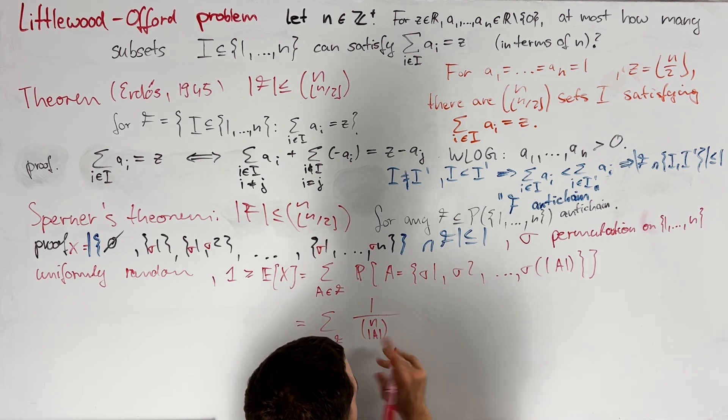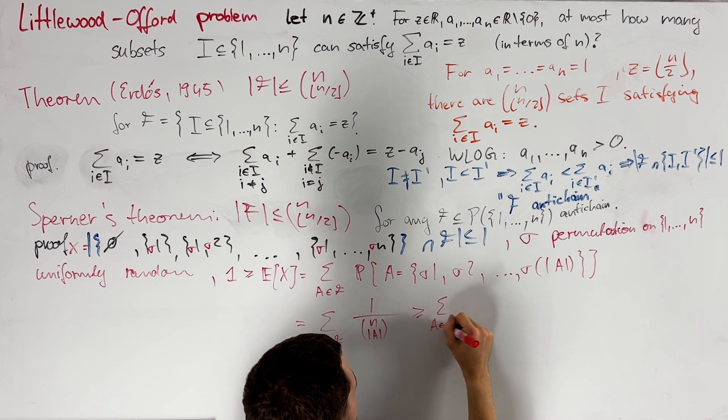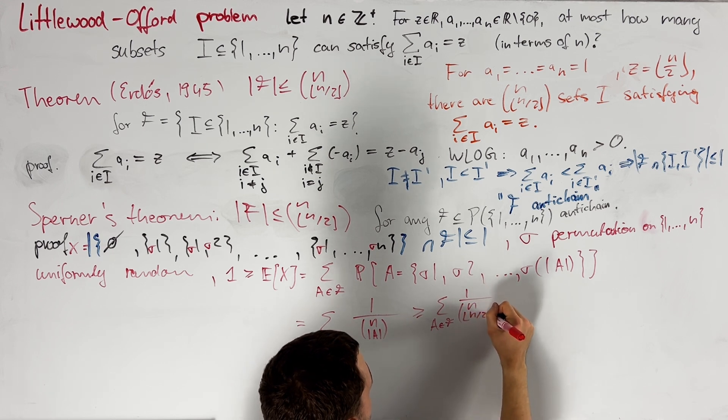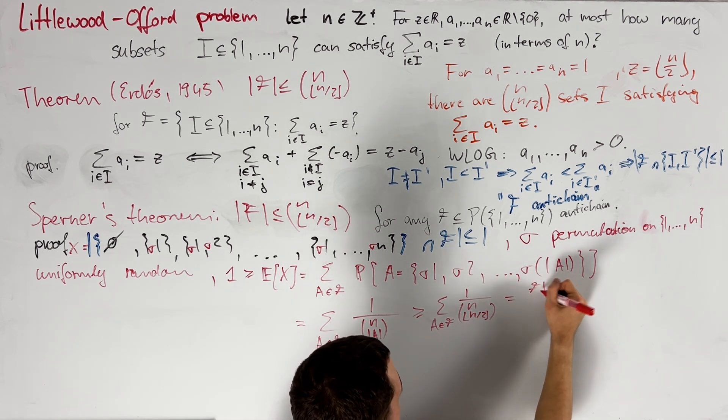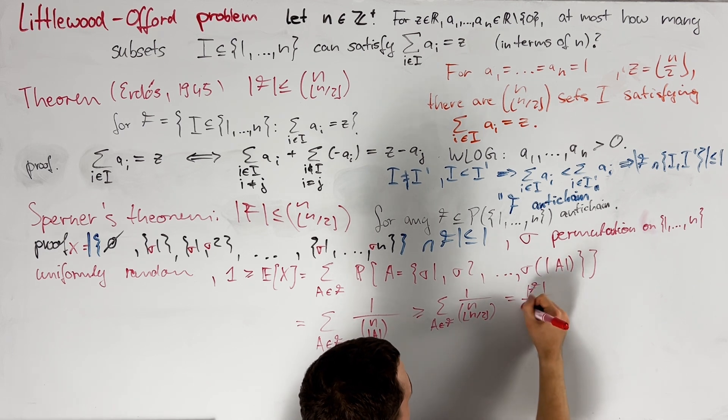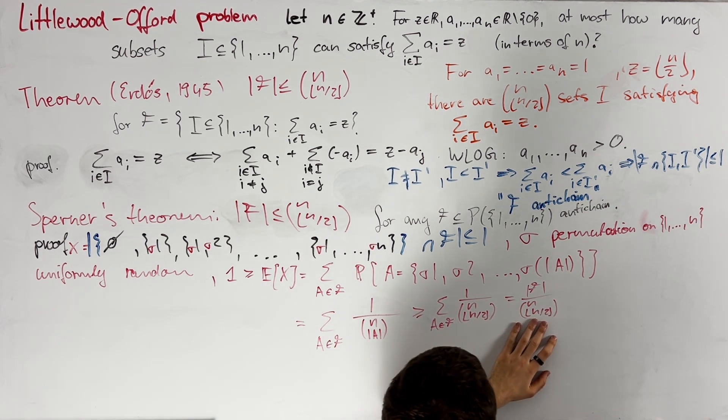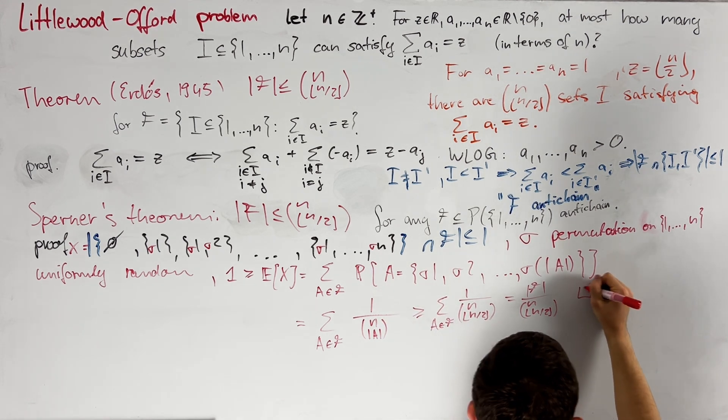Since this binomial coefficient is largest when a is as close to n halves as possible, this is greater than or equal to the sum of all a in F of 1 over n choose the floor of n over 2, which is equal to F, or the size of F, divided by this binomial coefficient. Rearranging our chain of inequalities, we see that indeed F is at most n choose the floor of n over 2.